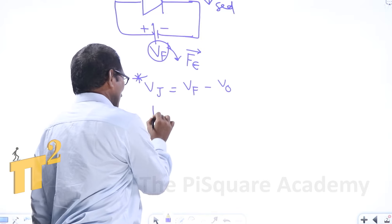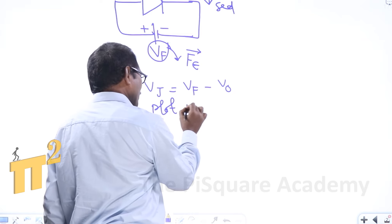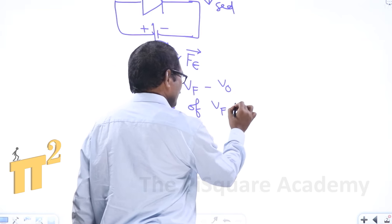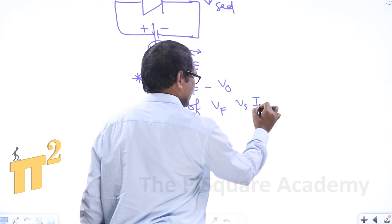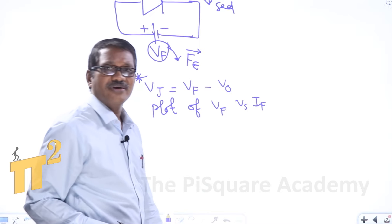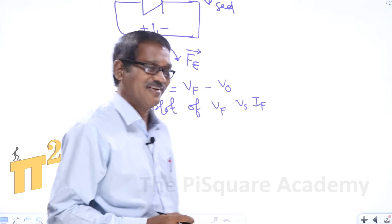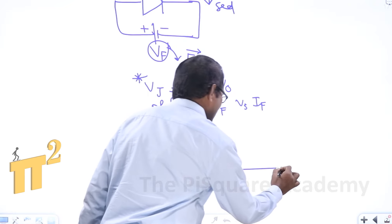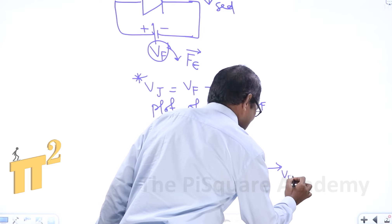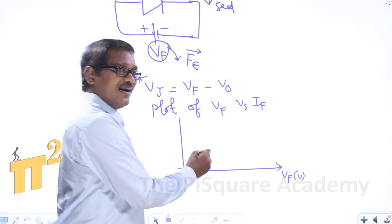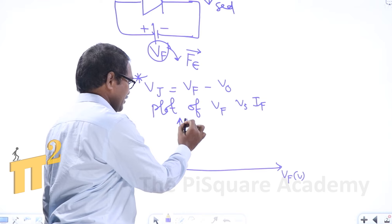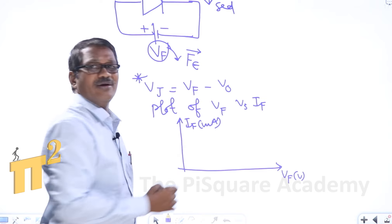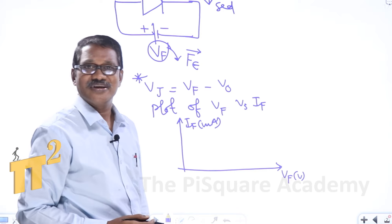Now let us draw the characteristic curves of the P-N junction diode under forward biased conditions. This is nothing but a plot of forward voltage Vf versus forward current If flowing through the diode. Vf is taken along the x-axis in volts and If is in milliamperes.